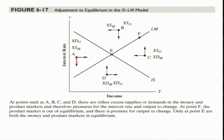Similarly, at any other position we can apply the analysis discussed in the previous two diagrams and see that there is pressure — for example, an upward pressure on rate of interest and a pressure for income to decrease. Point F is not an equilibrium position. At point F, the money market is in equilibrium but the product market is not at equilibrium. The product market is out of equilibrium and there is pressure for output to change. Only at point E are both the product market and money market in equilibrium.